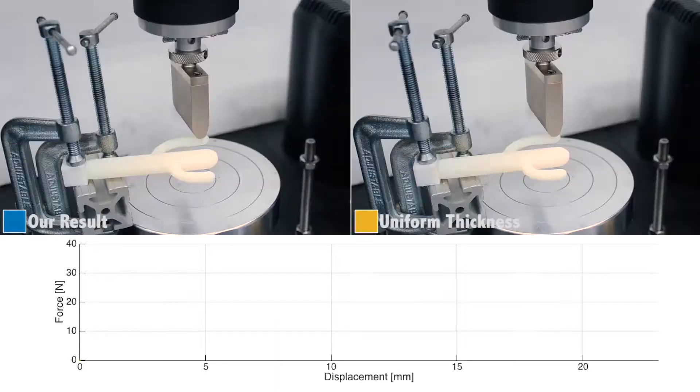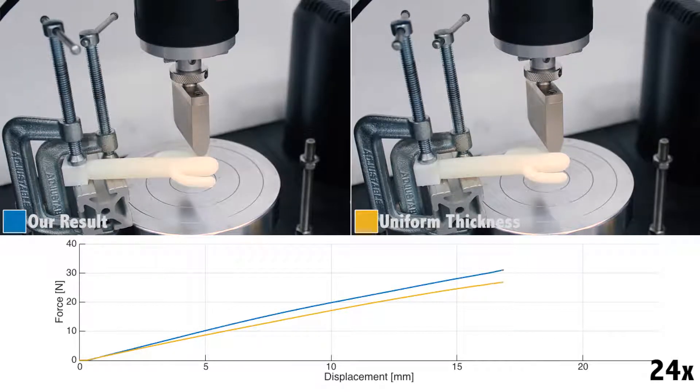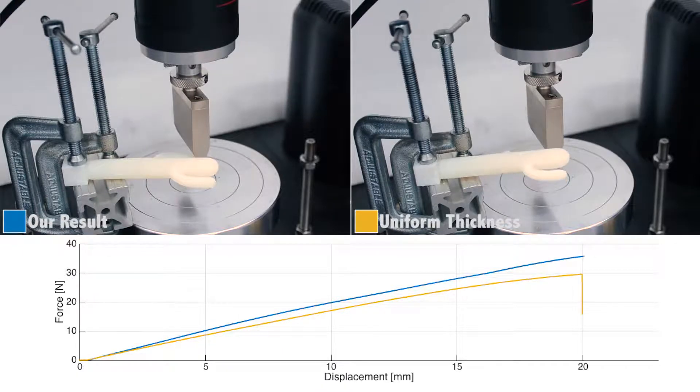We 3D printed and tested our optimized cactus model. For comparison, we show an identical weight, uniform thickness cactus. Our optimized model withstands 20% more load before failure.